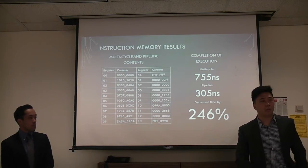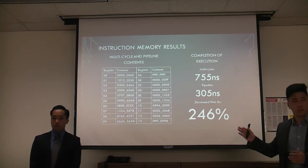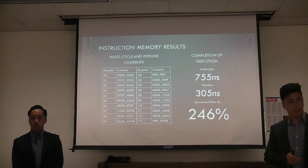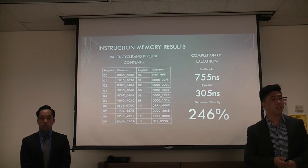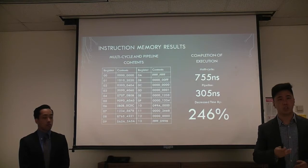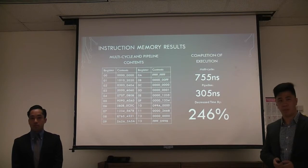After executing the same instruction memory in both architectures, all register values were exactly the same in both multi-cycle and pipeline implementations. The key difference is that the multi-cycle completed execution in 755 nanoseconds, while our pipeline completed it in 305 nanoseconds — meaning our pipeline executed these instructions 246% faster than the multi-cycle.